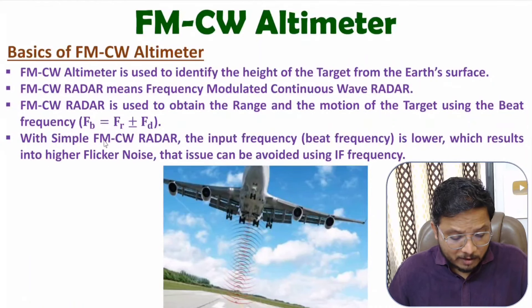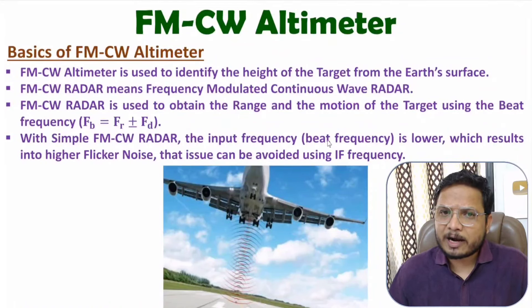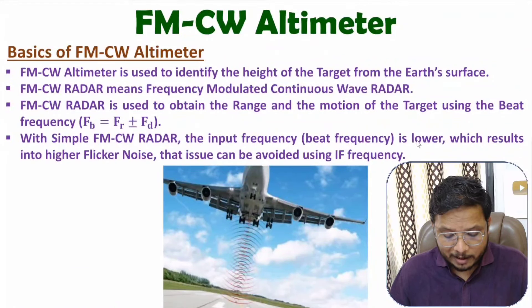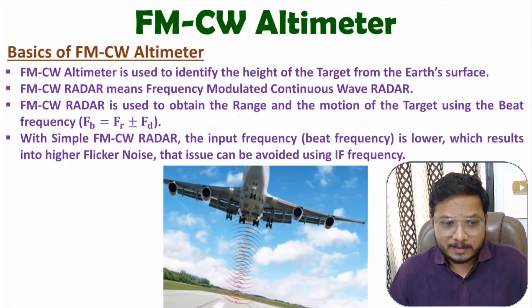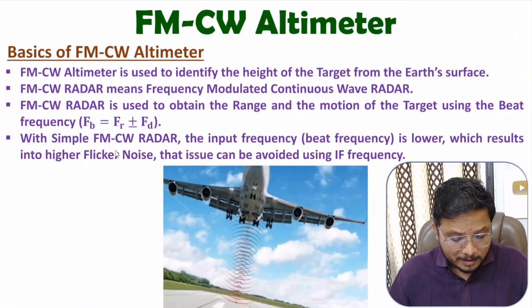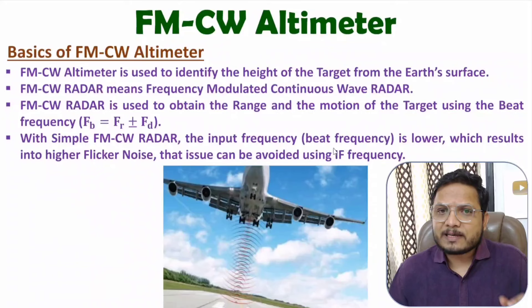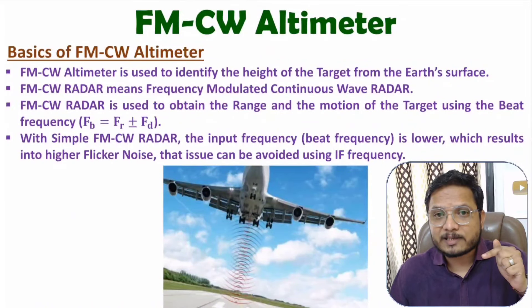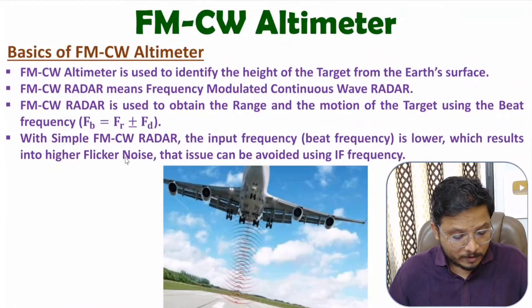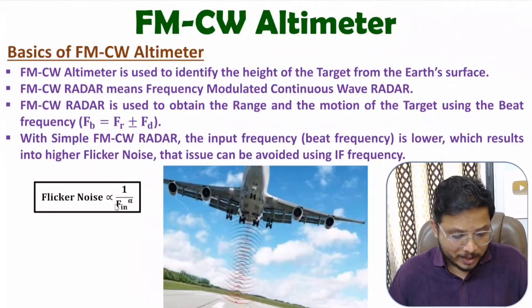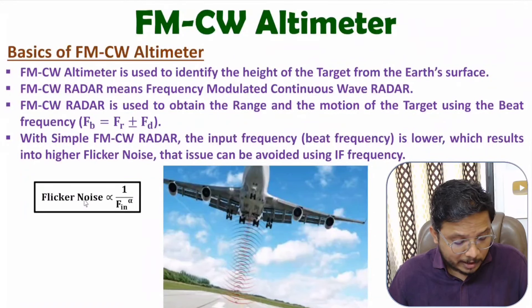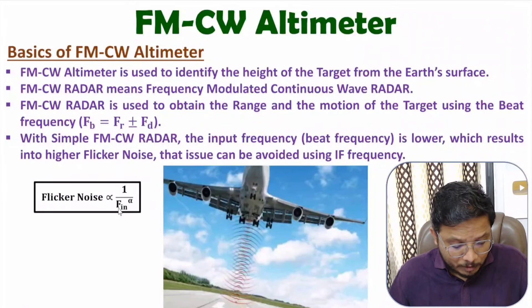With the simple structure of FMCW radar system, the input beat frequency is in terms of few kilohertz only, so input frequency is lower. When input frequency is lower at the receiver, there are higher chances of flicker noise. To avoid flicker noise, we use IF frequency — intermediate frequency — which is a higher frequency. Flicker noise is proportional to 1 divided by input frequency to the power alpha, where alpha is unity. So input frequency is inversely proportional to flicker noise: lower the input frequency, higher the flicker noise. To avoid flicker noise, we need to increase input frequency of the receiver using IF frequency.